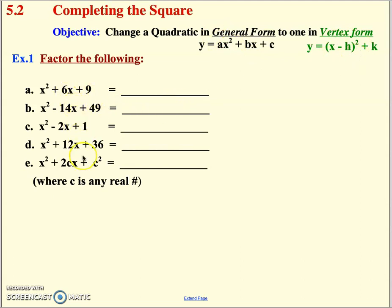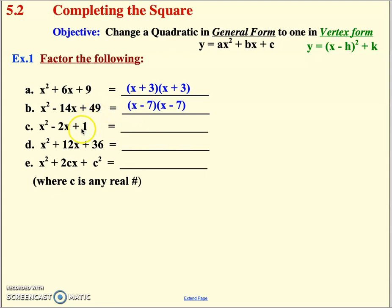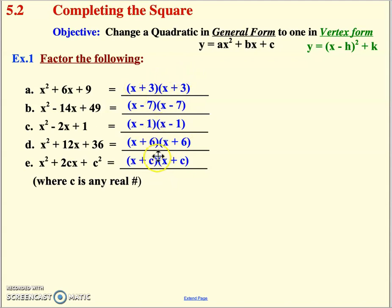The first thing we're going to do is look at these unique quadratics and their factoring. The factors of 9 that give you 6 would be 3 and 3 — they're the same factor. Similarly, factors of 49 giving 14 are 7 and 7; factors of 1 giving negative 2 are negative 1, negative 1; and factors of 36 giving 12 are positive 6, positive 6. When factors are identical, we don't write them listed out — we write it as one factor squared.